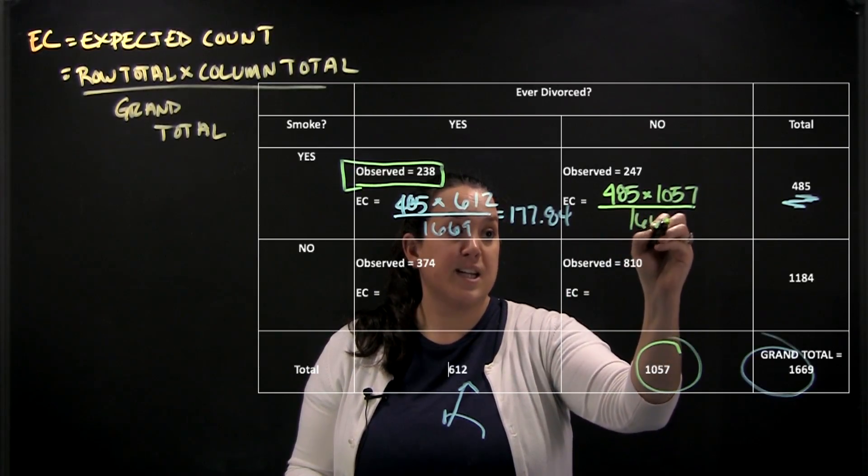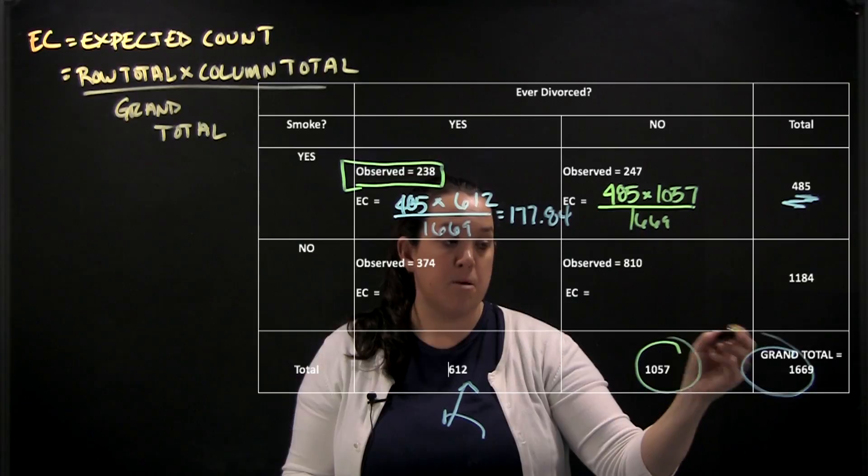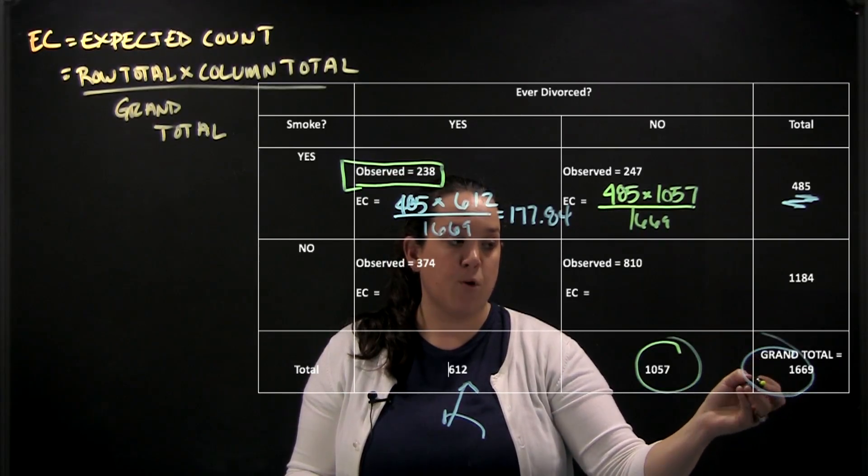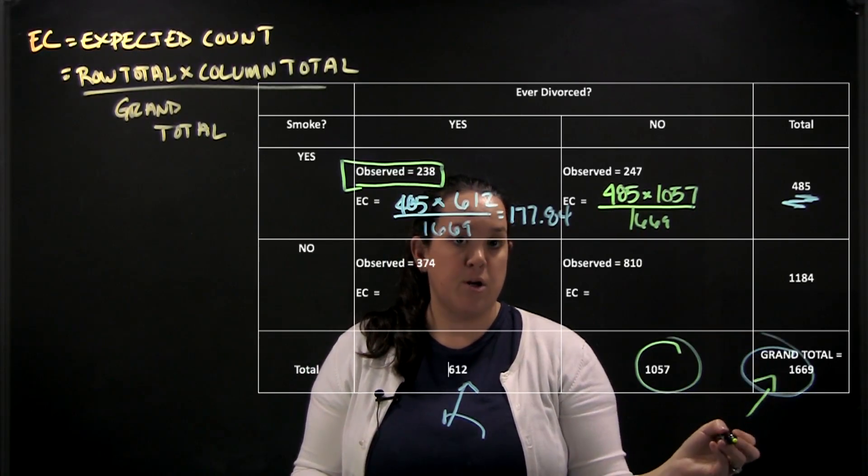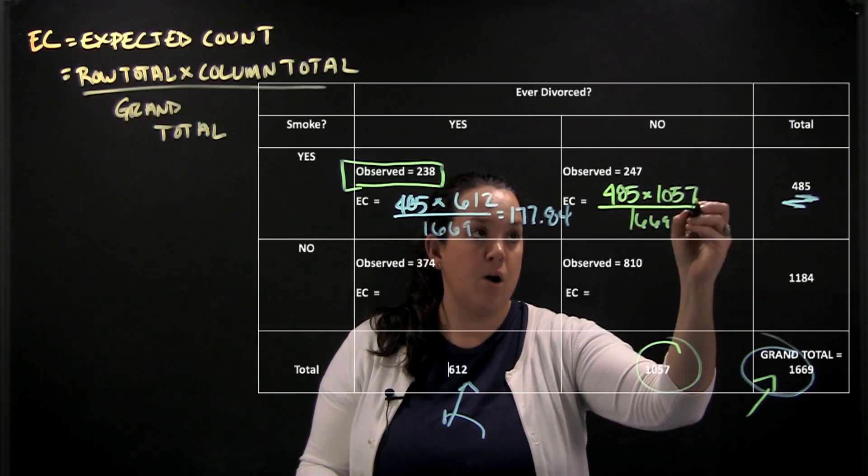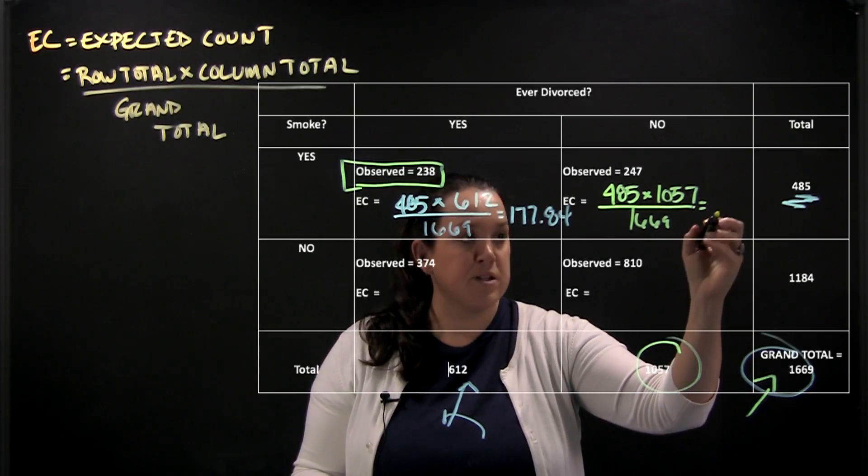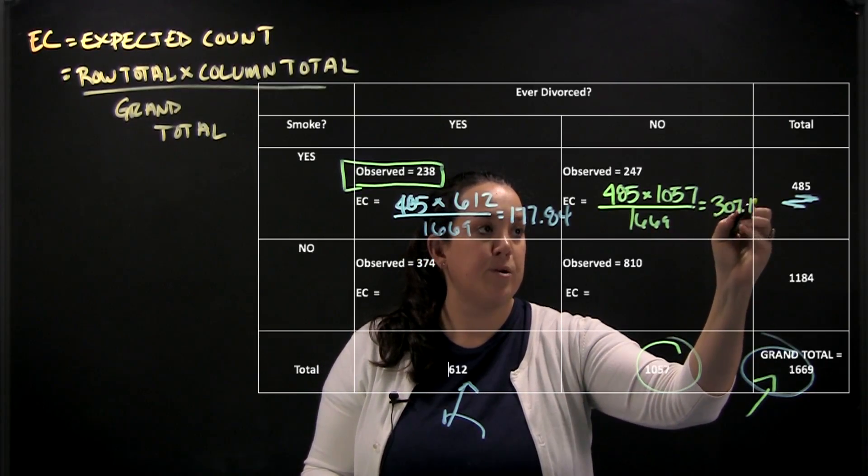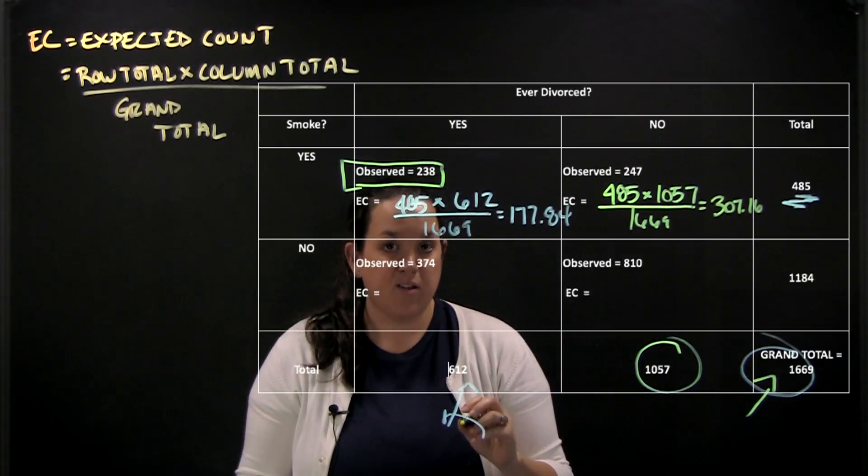But you'll notice for each of these cells because we're in the same table all of them will use the same grand total which is shown down here in the bottom right hand corner. So this would give us an expected count of 307.16.